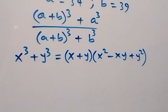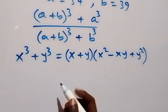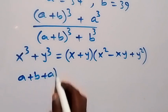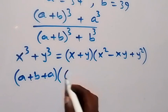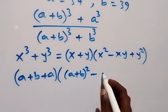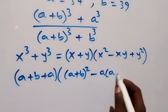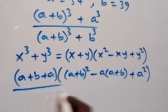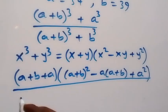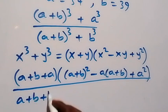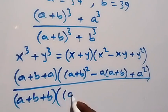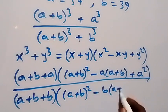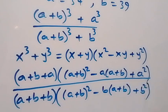So applying this to what we have here, where x is serving as (a plus b), the numerator expands to (2a plus b) into bracket [(a plus b) squared minus a times (a plus b) plus a squared], divided by the denominator which gives (a plus 2b) into bracket [(a plus b) squared minus b times (a plus b) plus b squared].